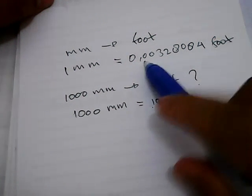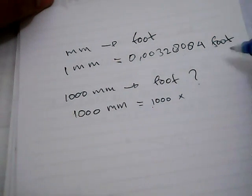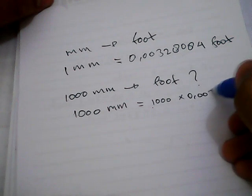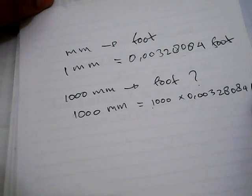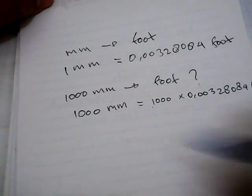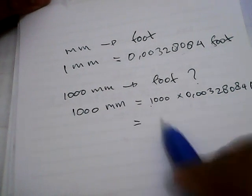...multiply it with this number, 0.00328084 foot. Well, why do you have to multiply this 1000 with this number?